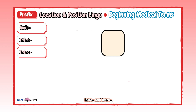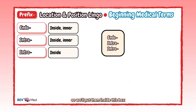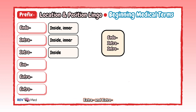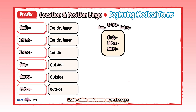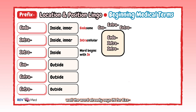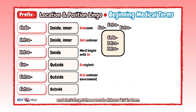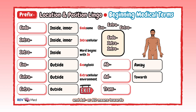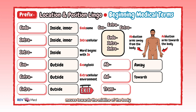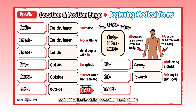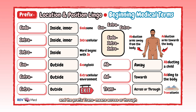Now let's get into location and position prefixes. Endo, intra, and intro all mean inside. Exo, extra, and exter all mean outside — remember they all have x in them, like the exit sign you use to go outside. Ab means away — abduction is when a body part moves away from the midline. Ad means towards — adduction means a body part moves towards the midline. Trans means across or through — think transatlantic.